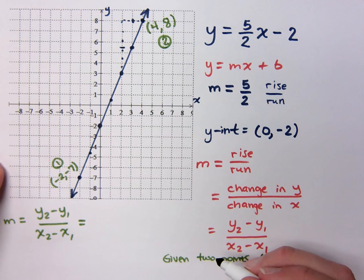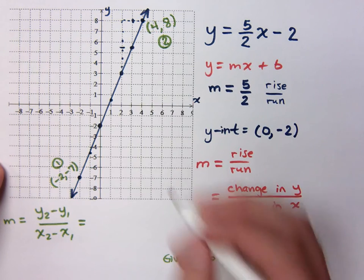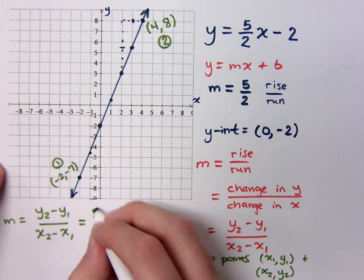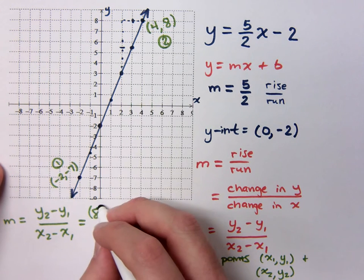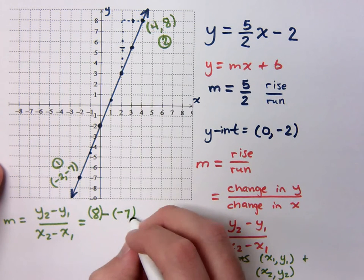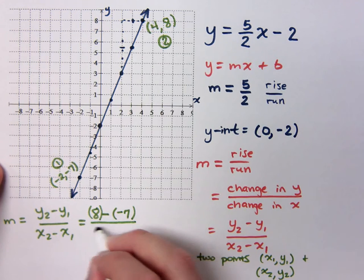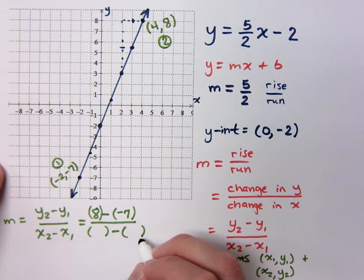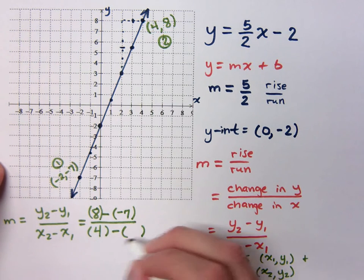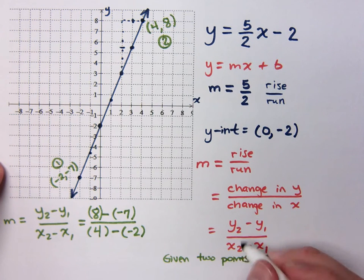What's y2? What's the y coordinate for the second point? It's 8 minus what's the y coordinate for the first point? Now maybe we should do this. Put parenthesis around what you're plugging into the formula. So put parenthesis around the 8, parenthesis around the negative 7, over x2 minus x1. What's x2? What's the x coordinate for the second point? What about for the first point? Negative 2.